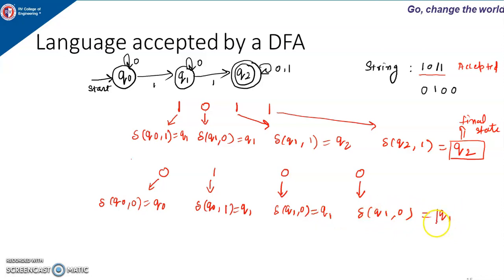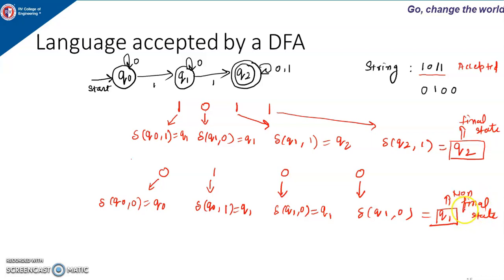End of the input string and Q1 is a non-final state. When end of the input string is encountered and we are not in the final state, we say that particular string is rejected by the machine. So the first one, 1011, is accepted and this one, 0100, is rejected by the machine.